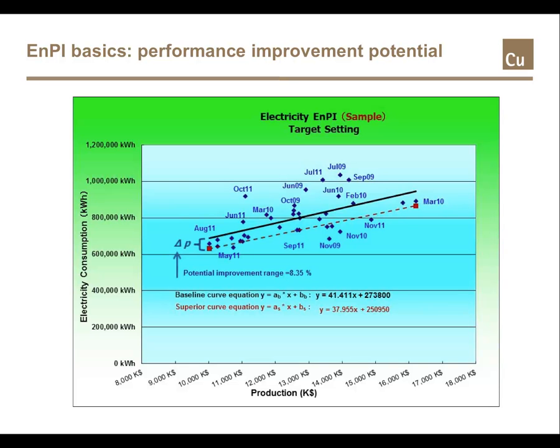Since the superior scatters represent proven performance, in theory you can conclude that the average scatters — the black line — can be improved to the average line of superior scatters, the red line. In this case, the potential improvement is 8.35%.